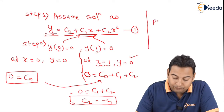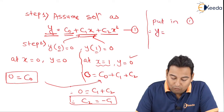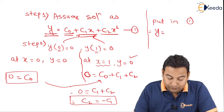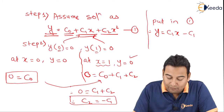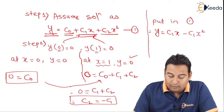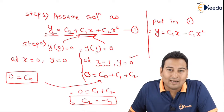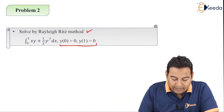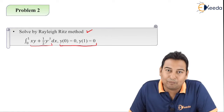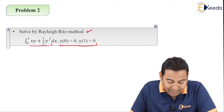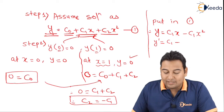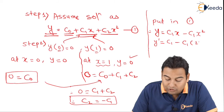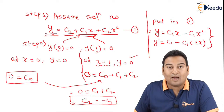We now substitute back into equation 1: y = c1·x − c1·x². From step 2, our aim is to find y, y', and y'' as needed. The given problem involves x·y + ½(y')², so we only need y'. Taking dy/dx: y' = c1 − 2c1·x.